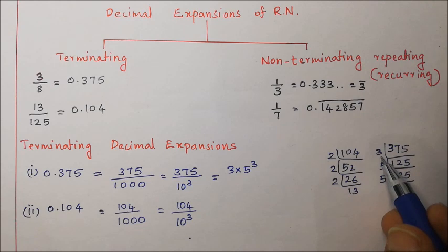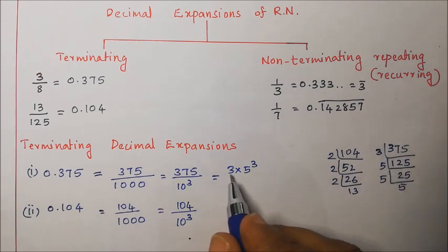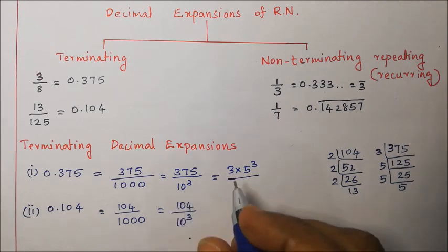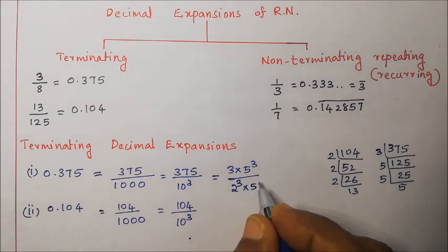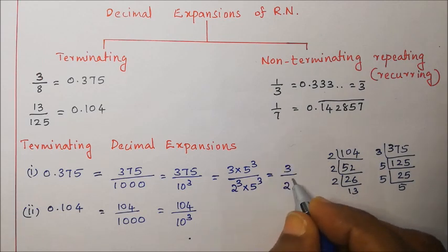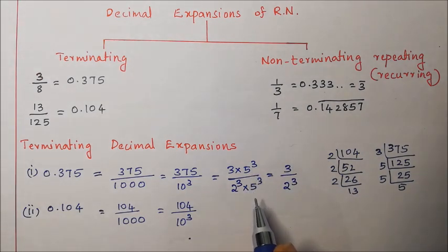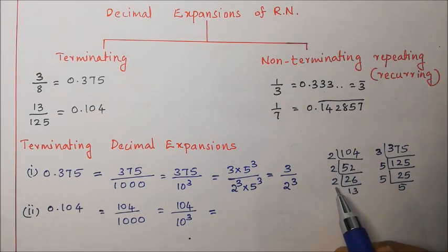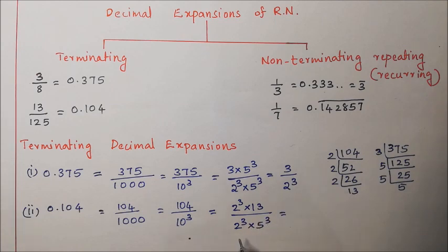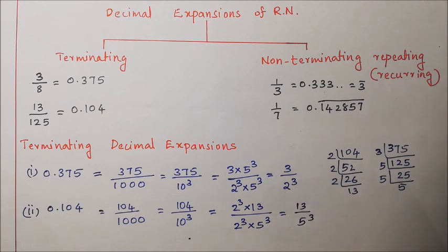Factors of 375 are 3 and 5, so we write it as 3 into 5 to the power 3, divided by 10 to the power 3 which is 2 to the power 3 into 5 to the power 3. Cancelling common factors, we get 3 by 2 to the power 3. For 104, factors are 2 to the power 3 and 13, giving 2 to the power 3 into 13 divided by 2 to the power 3 into 5 to the power 3. Cancelling, we get 13 divided by 5 to the power 3. So the denominator is now in the power of 2 and 5.